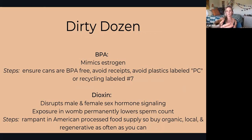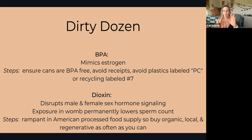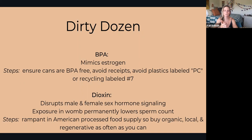Now the dirty dozen in more detail. BPA: it mimics estrogen. Steps to take — make sure canned food, bottles, and containers are BPA-free. Receipts are printed on thermal paper lined with BPA, so avoid touching receipts. Avoid plastics labeled PC or recycling number 7. Dioxin is created when chlorine or bromine are burned in the presence of carbon and oxygen — it's in the American food supply chain. All processed foods have some level of dioxin. It disrupts male and female sex hormone signaling. Try to find local, organic, regenerative farmed foods as often as you can.